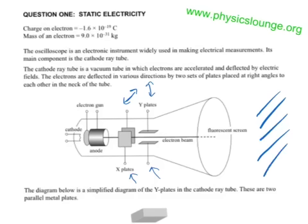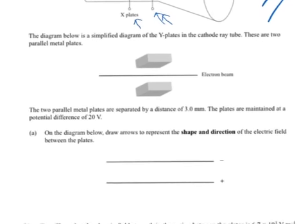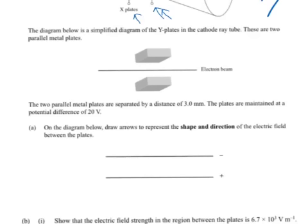The diagram below is a simplified diagram of the Y plates, which were these ones. In the cathode ray tube these are two parallel metal plates. The two parallel metal plates are separated by a distance of 3.0 mm, that's to two significant figures. It's not SI units. These are the things you should be noticing, so if we were to put that in SI units, it's 0.003 meters.